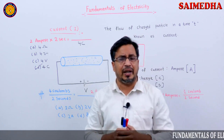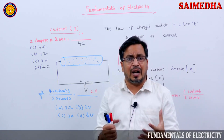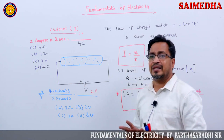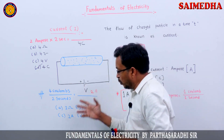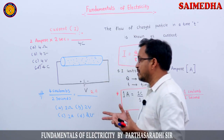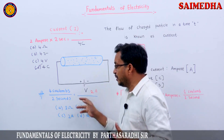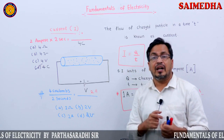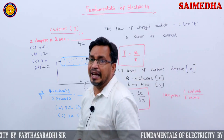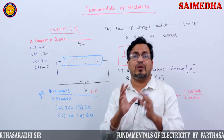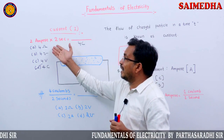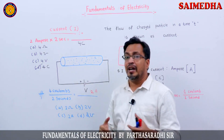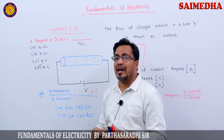If you have a question: I equals Q by T. The question is 4 coulombs by 2 seconds equals dash. Options include 2 ohms, 2 volts, 2 amperes, 2 moles. 4 by 2 is 2. The unit is coulombs by seconds, which equals amperes. How do you know? The formula and the units both tell you. For 2 amperes into 2 seconds, 2 into 2 is 4, with options 4 ohms, 4 volts, 4 coulombs.